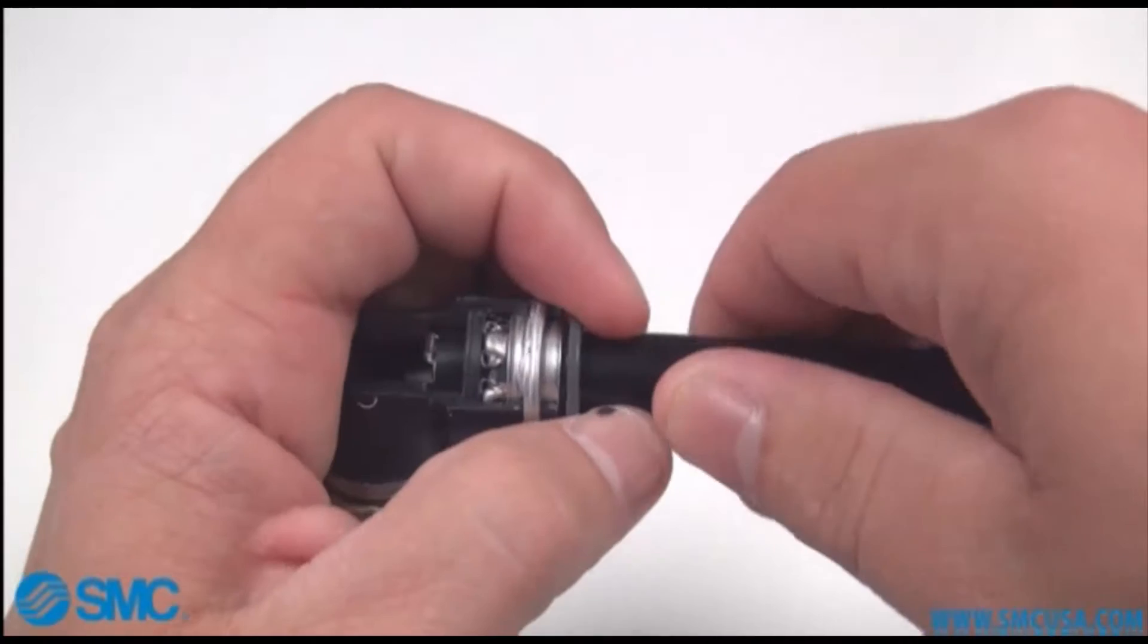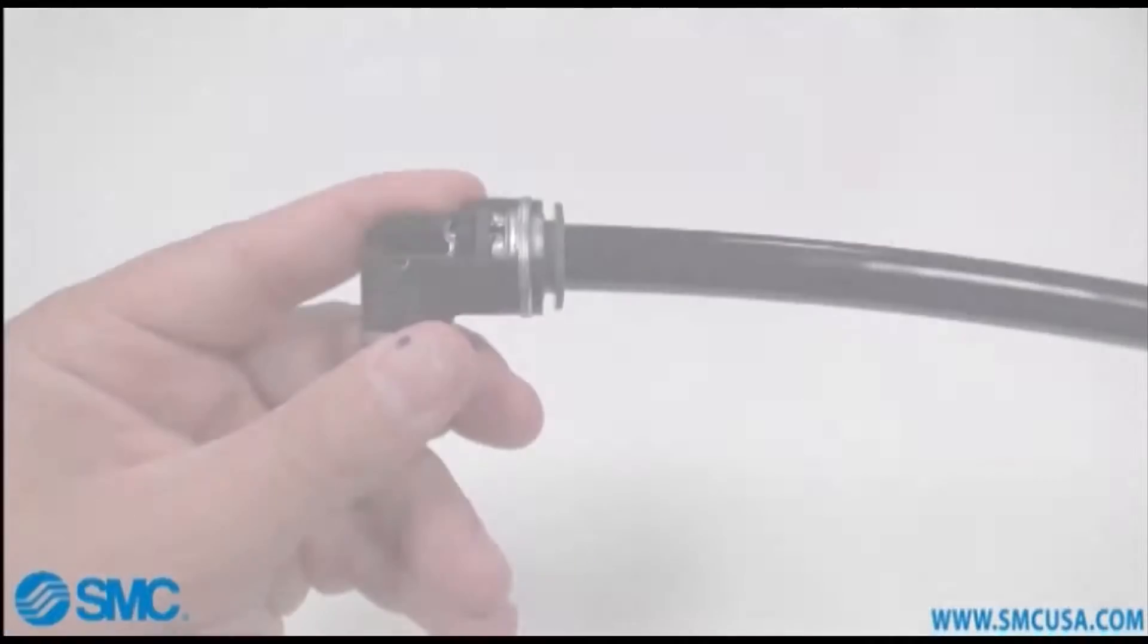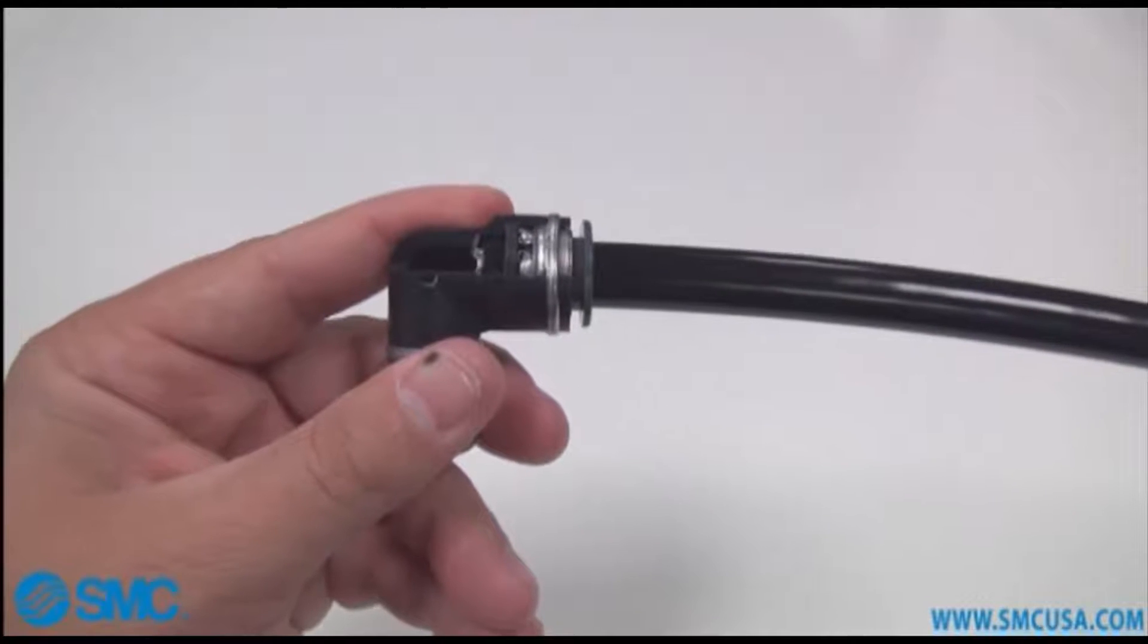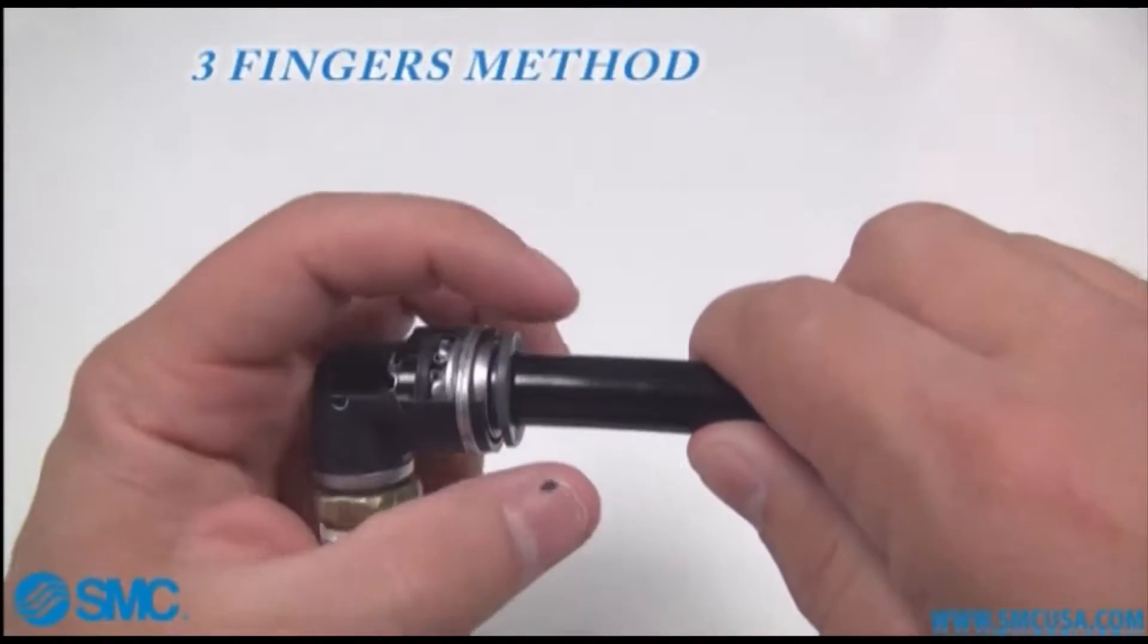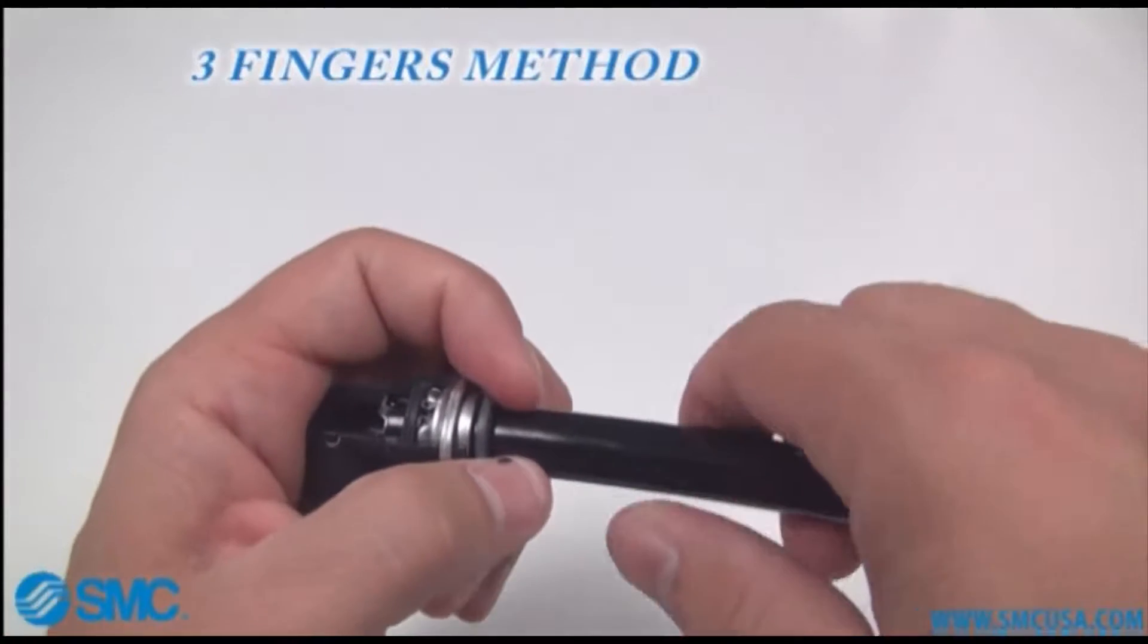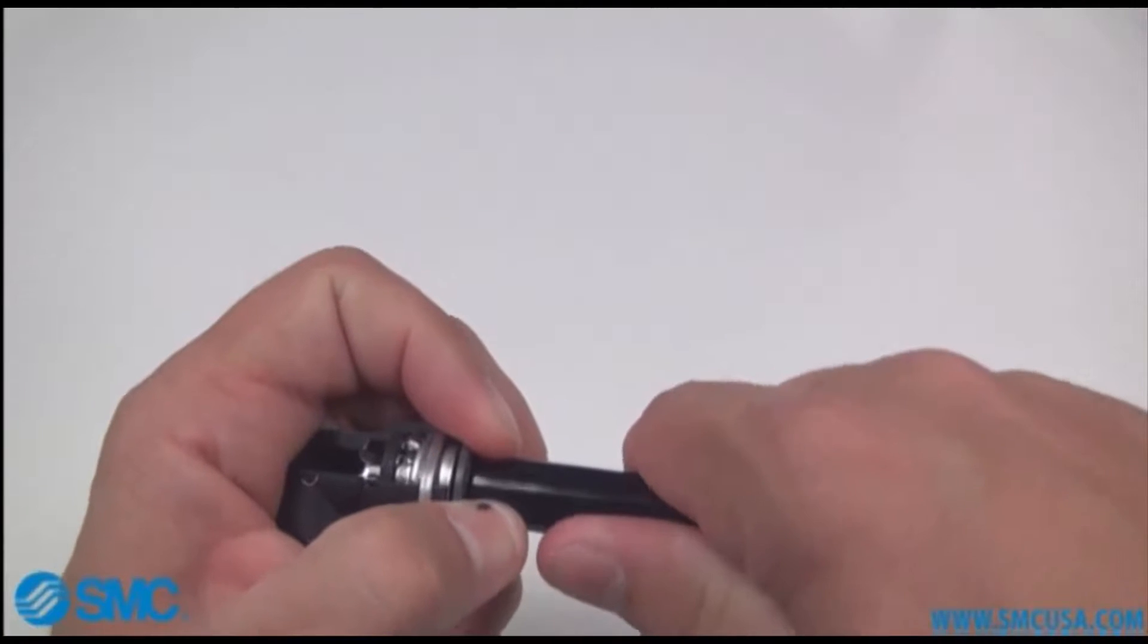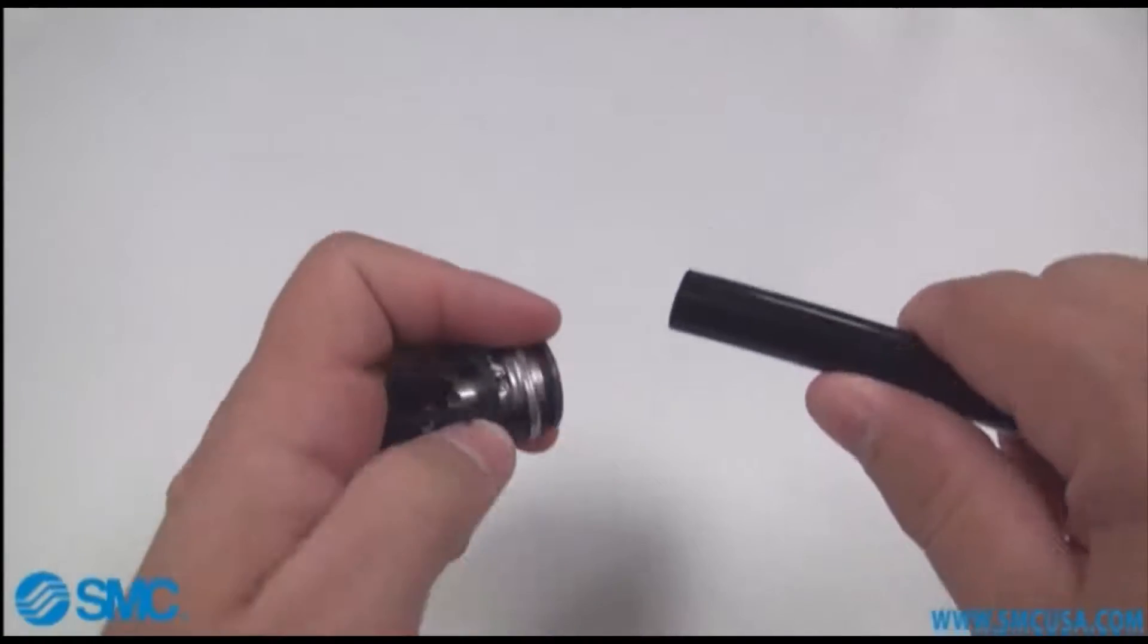The last part that we will cover is the proper way of removing the tube from the fitting. Make sure when removing tubing that you are pressing on the button uniformly. The best way to do this is to use three fingers to hold the button down while using the other hand to remove the piece of tubing. This may be tough in a tight space so do your best.